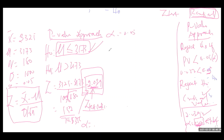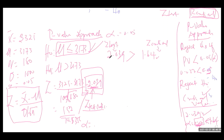We said our Z-test statistic is 2.039, and we are comparing it to the Z-critical value of 1.64. Obviously, 2.039 is greater than 1.64. One of the rules states: if the Z-test statistic is greater than the Z-critical value, we reject the null hypothesis.